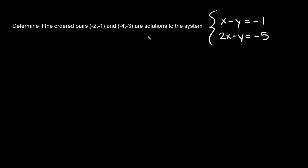In order to figure out if they are solutions or not, all you have to do is take your ordered pair and plug it into both of these equations. If this ordered pair makes both of these equations true, then it is a solution. But if it only makes one of them true and the other one false, then it's not a solution. Or if you plug it in and they're both false, then it's not a solution at all.